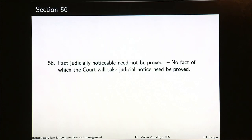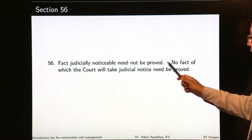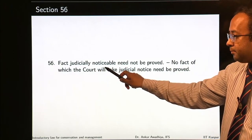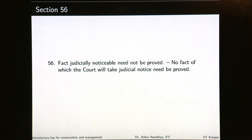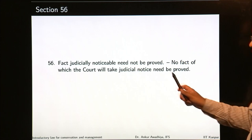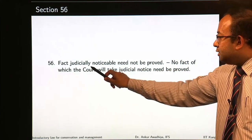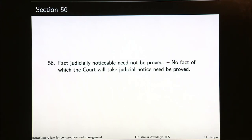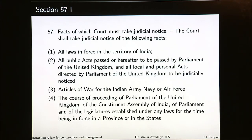Section 56 deals with facts judicially noticeable — they need not be proved. No fact of which the court will take judicial notice needs to be proved. There are certain facts defined to be judicially noticeable, and if a fact is judicially noticeable, it need not be proved in the court of law — it will be presumed to be correct.